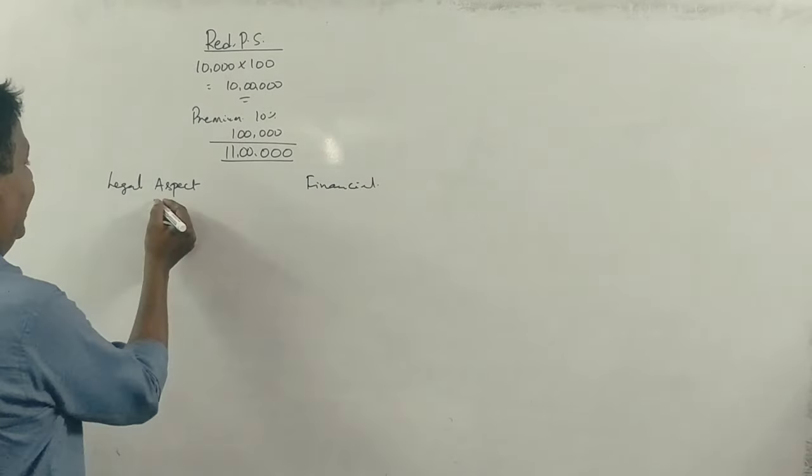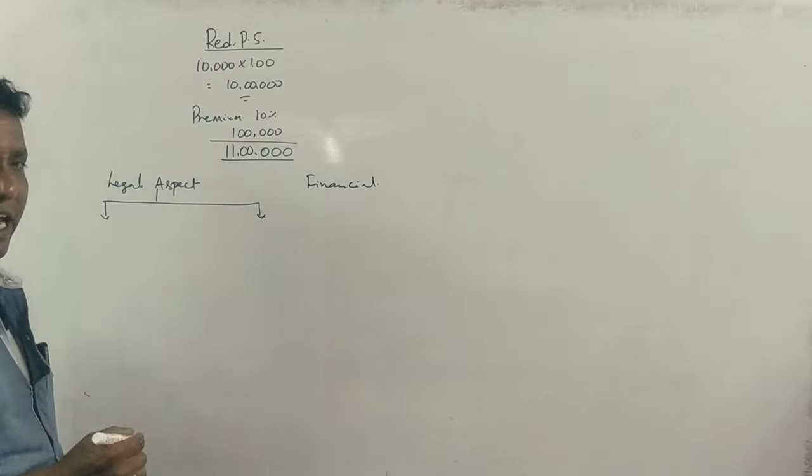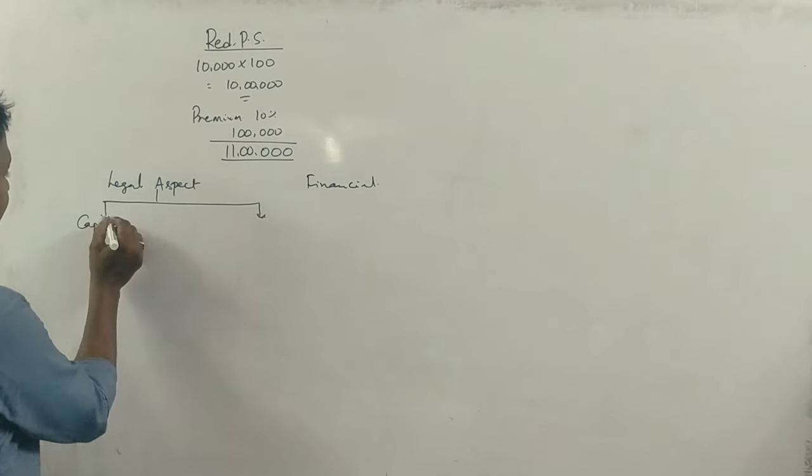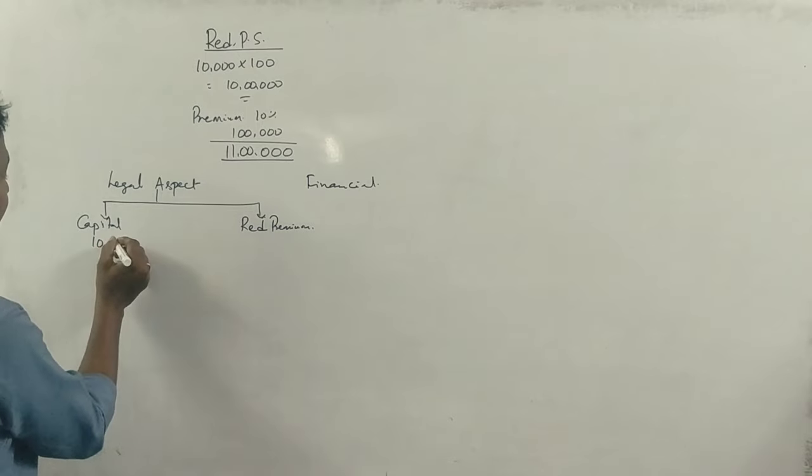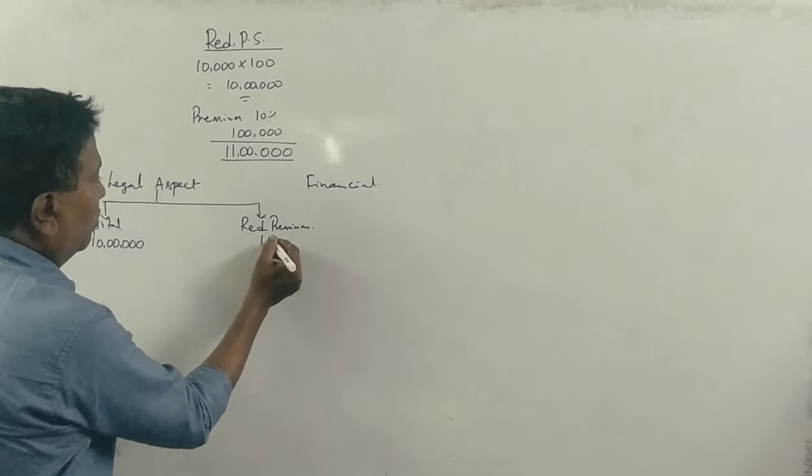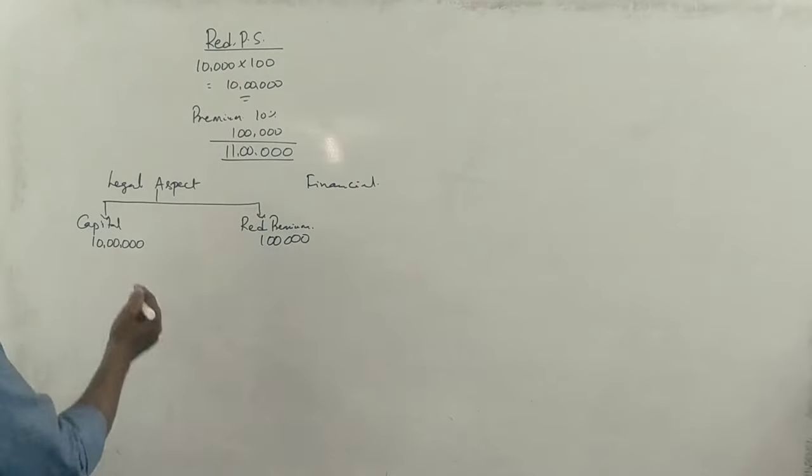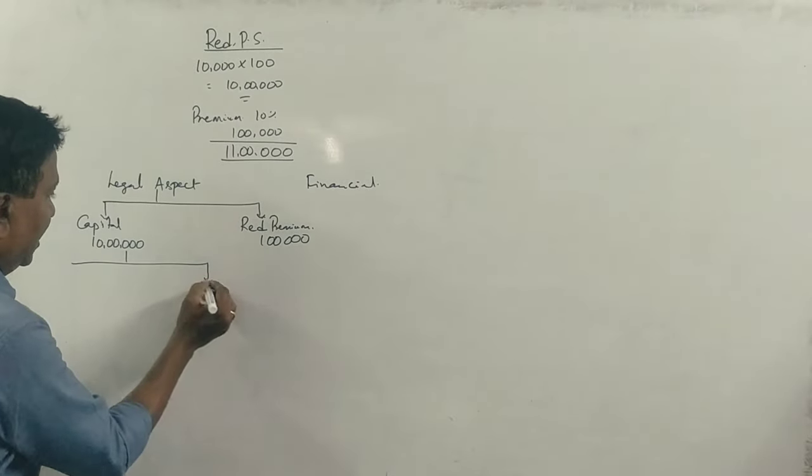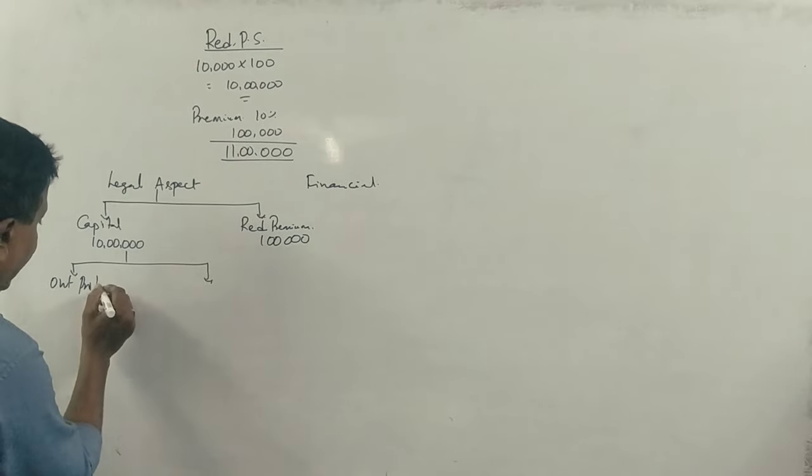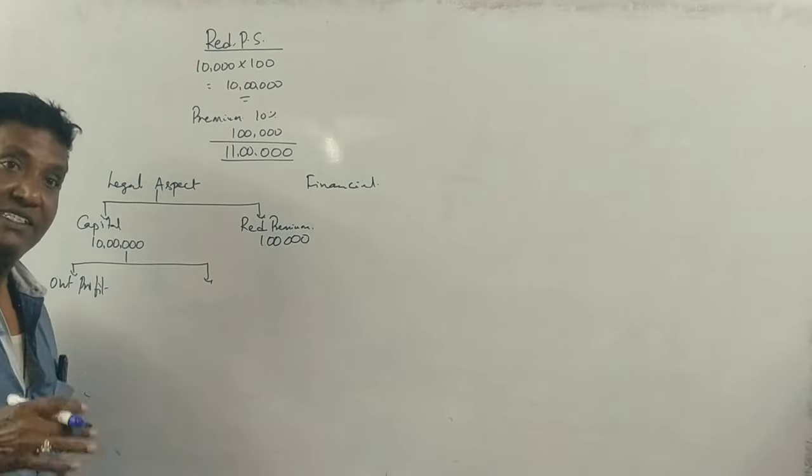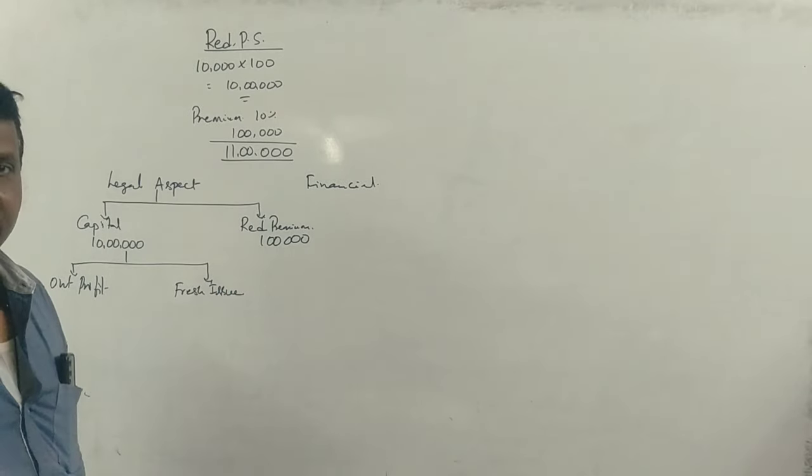In the legal aspect, the total preference share capital is 10 lakhs. Redemption premium is 1 lakh. The question states 10,000 shares at 100 rupees each, so capital is 10 lakhs and premium is 1 lakh. What is the total? 11 lakhs. We have to pay 11 lakhs. Now, what is the premium? It's 10%. Then the premium amount is 1 lakh. Correct?